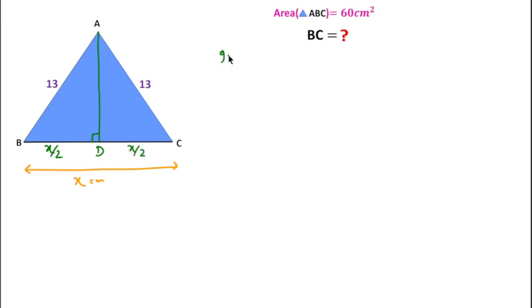We can write in right triangle ADB, by using Pythagorean theorem, AB square equals BD square plus AD square. AB is 13 square and BD is x over 2 whole square plus AD square.